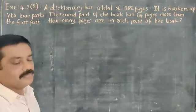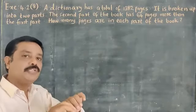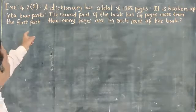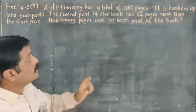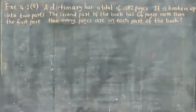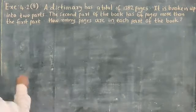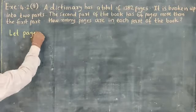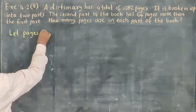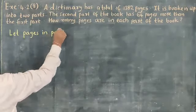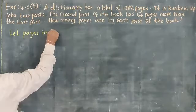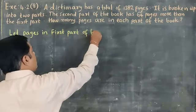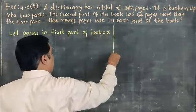A dictionary is broken up into two parts. Given that the second part of the book has 64 more pages than the first part, let the pages in the first part of the book be equal to x pages.